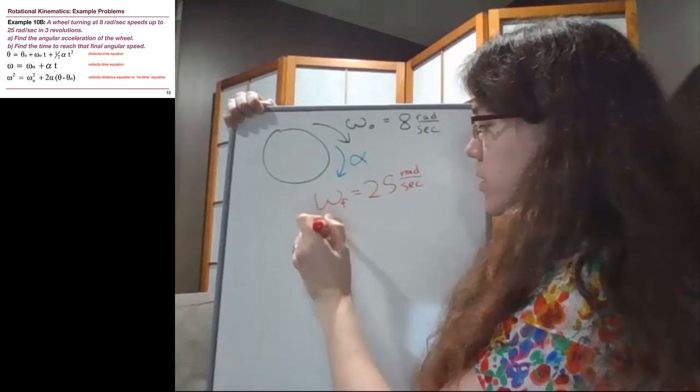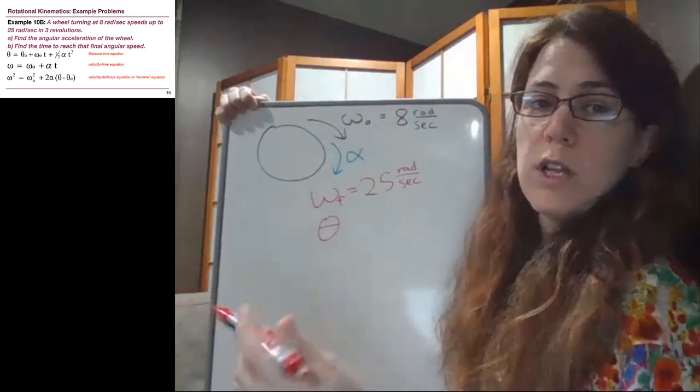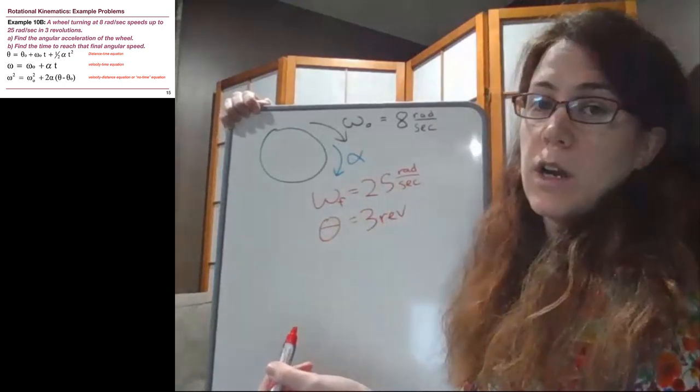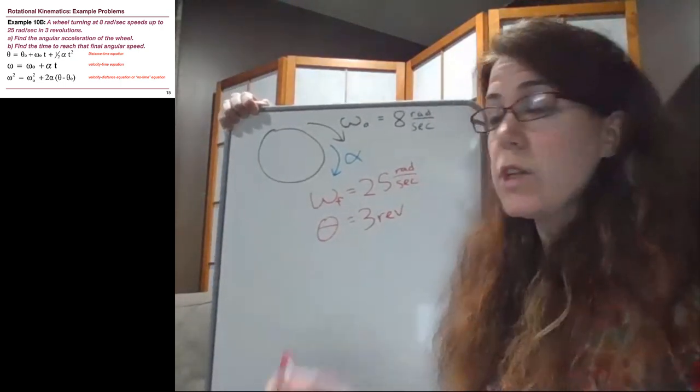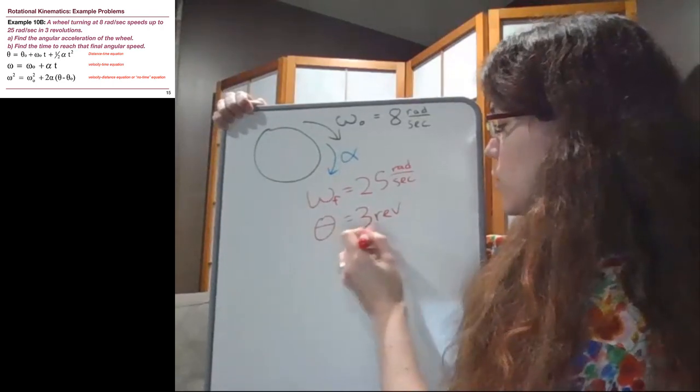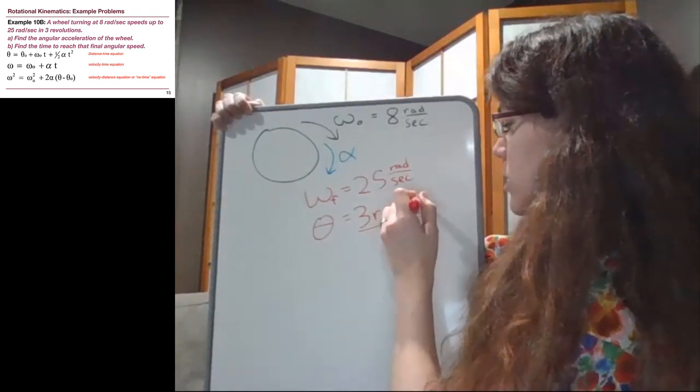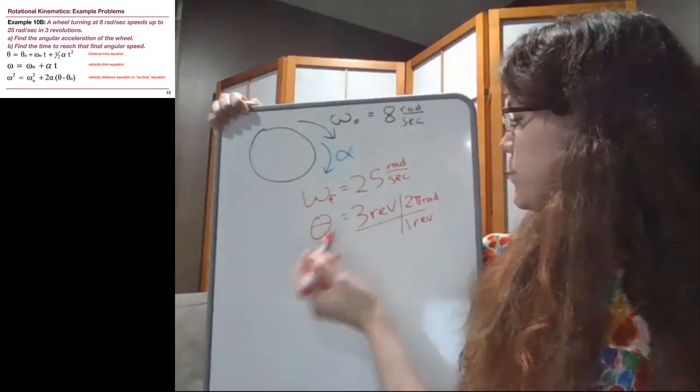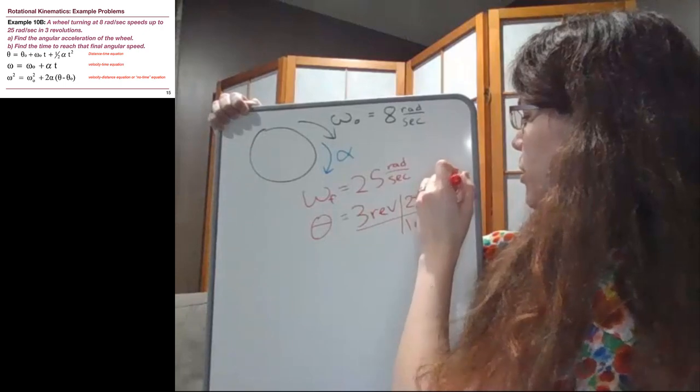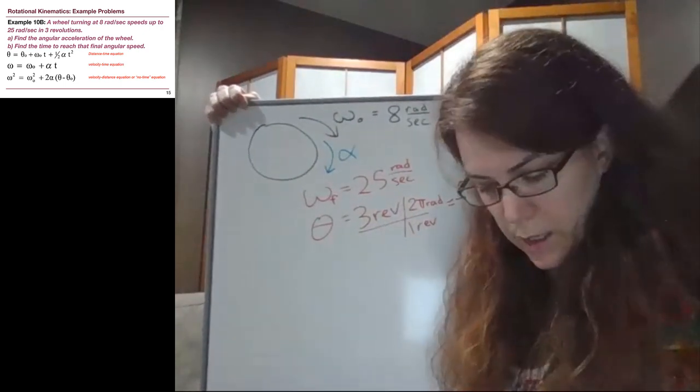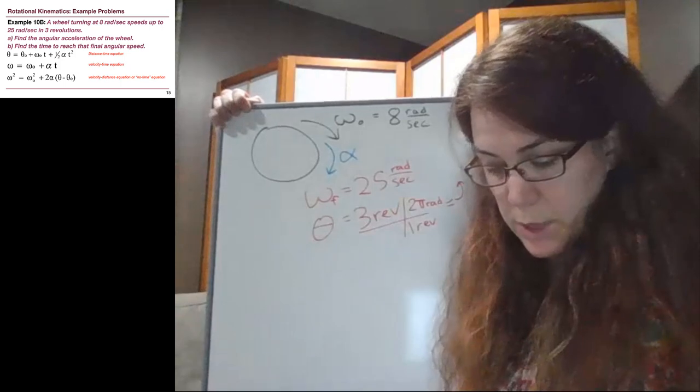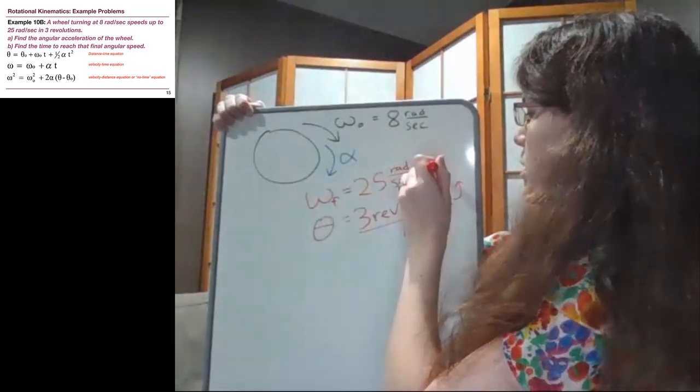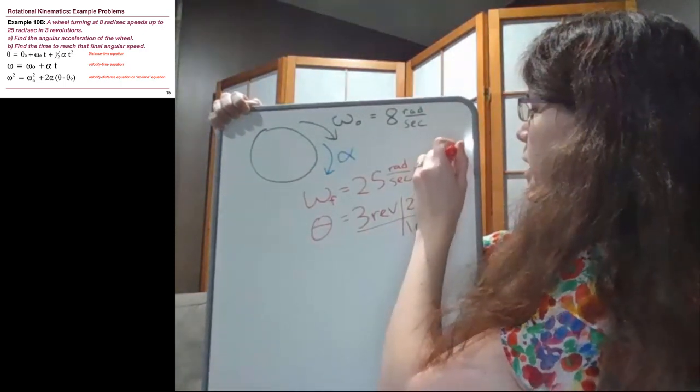The final angle is 3 revolutions. We know that for theta, the standard unit needs to be radians. So we turn that into radians. There are 2π radians in one revolution, so our theta value is 6π or 18.8 radians.